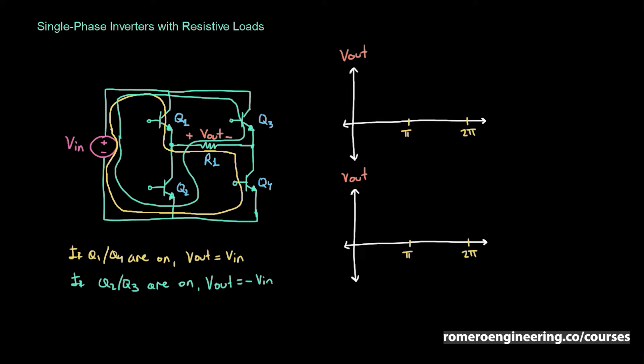If we switch Q1 and Q4 ON for the first half of the cycle and then Q2 and Q3 ON for the other half, the output voltage looks like a square wave that repeats every 2π. We've made an alternating voltage at the output from a DC input, but this is nothing close to a sine wave — it's very distorted. We're trying to achieve a perfect sine wave at the output, and this is not close to that.